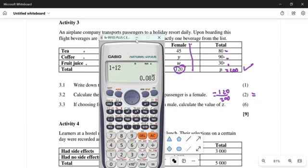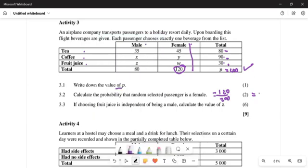You get 0.60. Now it gets tricky. They say if choosing a fruit juice is independent - you are not proving yet, they are telling you - choosing a fruit juice is independent of being a male, calculate the value of Z.